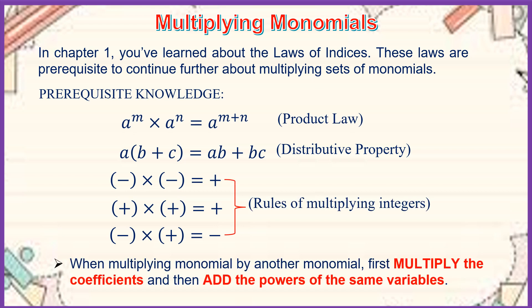Take note that when multiplying a monomial by another monomial, first multiply the coefficients and then add the powers of the same variables.